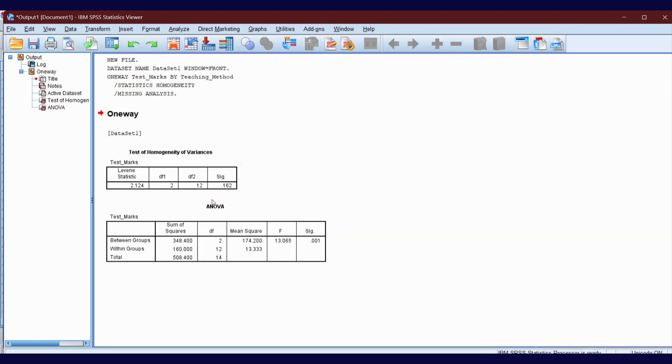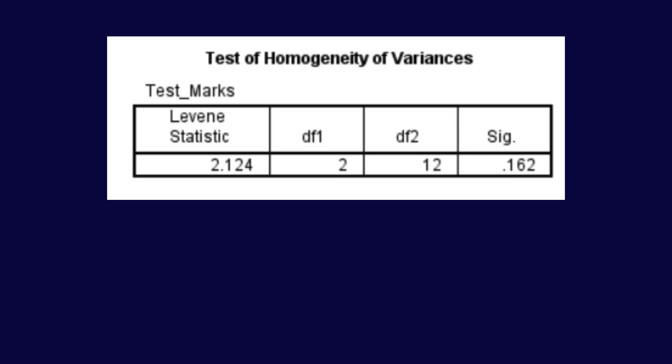Here's our output results. Let's interpret the results. We got 0.162 as our significant value. Our significant value is greater than the commonly used alpha level of 0.05. Therefore, you fail to reject the null hypothesis of Levene's test. Since the p-value is greater than 0.05, you can conclude that the variances across the different groups are statistically equal.